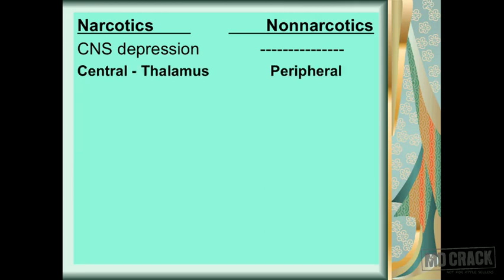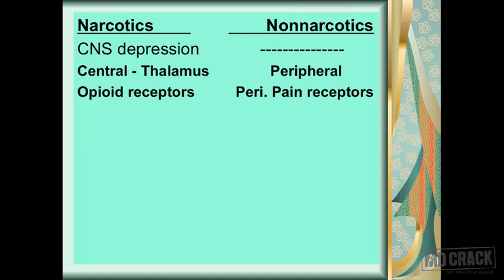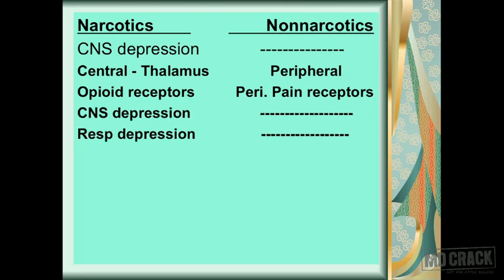You don't expect, in usual therapeutic doses, a great amount of CNS depression or sedation or drowsiness with non-narcotic analgesics. Narcotics mainly act on the central nervous system — the thalamus, the center for pain — while non-narcotics mainly act on peripheral pain receptors. Narcotics act on opioid receptors; non-narcotics act on peripheral pain receptors. Narcotics produce CNS depression; non-narcotics don't.